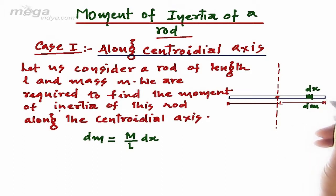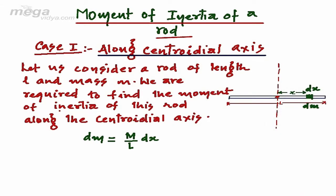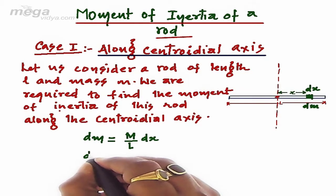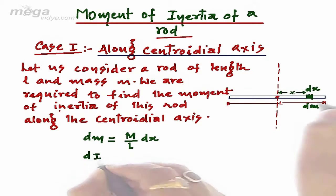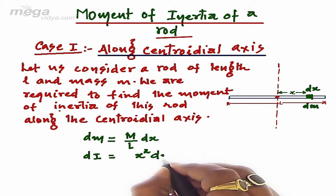Since the elementary length dx is placed at a distance x from the centroidal axis, the moment of inertia dI, basically dI is the moment of inertia of this elementary length, dI will be equal to x squared into dm.